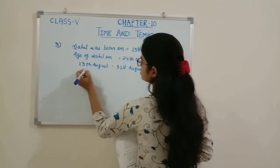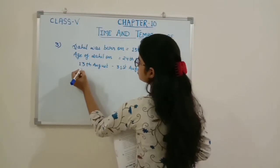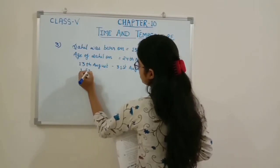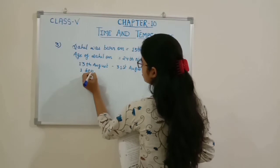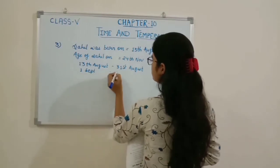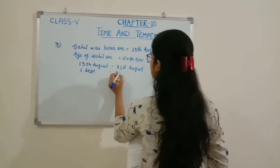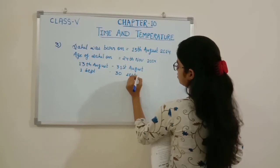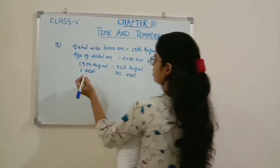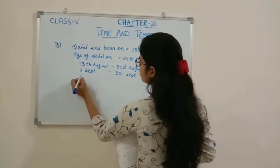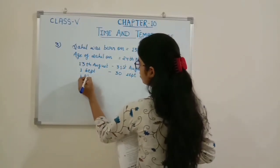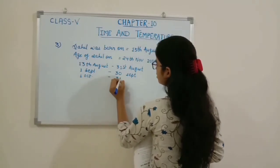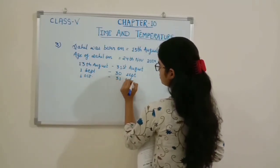After August it is September — 1st September to 30th September. Then 1st October to 31st October.